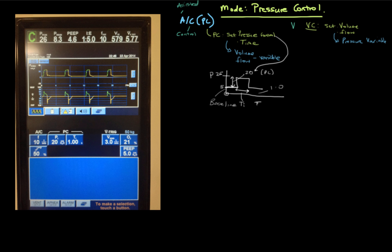Let's look at the ventilator screen — the same ventilator used in the volume control video for consistency. We set some variables on the ventilator, shown in the blue boxes. Up here are the measured variables — things like peak pressure, mean pressure, PEEP, and I:E ratio — which the ventilator measures; we don't select these. The part that relates to pressure control is conveniently bracketed with 'PC' here.